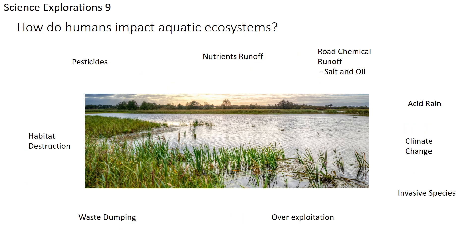Humans impact aquatic ecosystems in many ways. Pesticides sprayed on lawns can run off into water during rain — herbicides can kill algae and aquatic plants. Fertilizers running through storm drains into aquatic ecosystems cause algae blooms. Too much algae is harmful: it shades out other algae, then decomposes, absorbing oxygen from the water and potentially killing the entire ecosystem through excess nutrient loading.